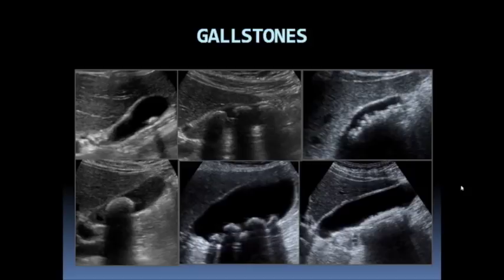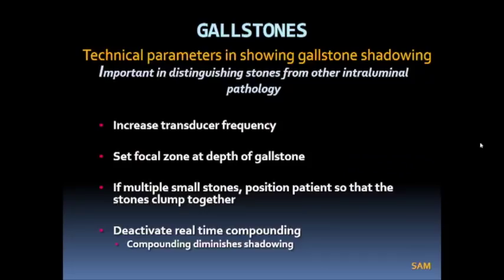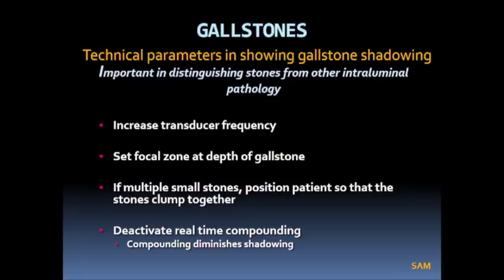Here is a spectrum of the ways gallstones can appear — different sizes and appearances, all echogenic luminal structures that shadow. To distinguish stones from other intraluminal pathology, we must understand technical parameters that affect shadowing. One such parameter is transducer frequency: sound is absorbed at higher frequencies, so increasing transducer frequency can allow a small non-shadowing stone to demonstrate shadowing.